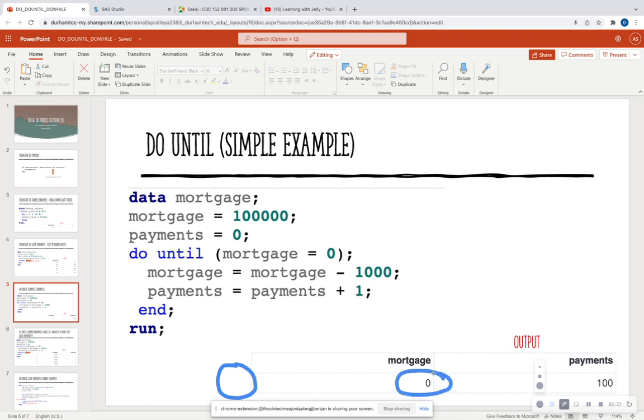Notice there's no output statement before the end, so it's just going to print me out one observation. So when my mortgage is zero, I would have made 100 payments. And that makes sense, because 100 times 1,000 is 100,000. So this is a simple do until loop, where it's going to keep going until a certain point, and you can keep track with a counter. In this case, my counter is called payments, because I'm keeping track of how many payments it would take to pay my mortgage in full.